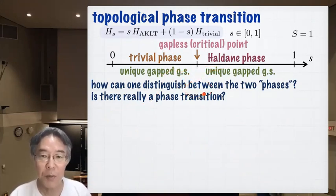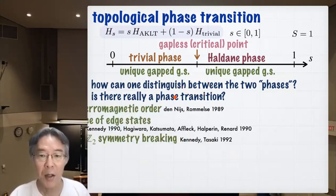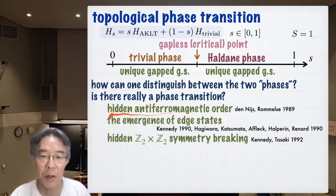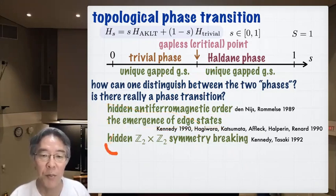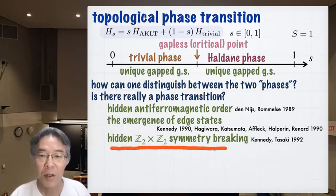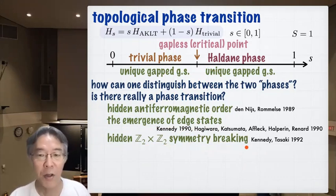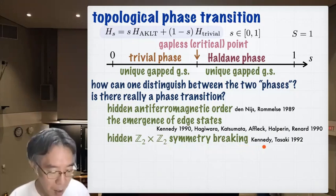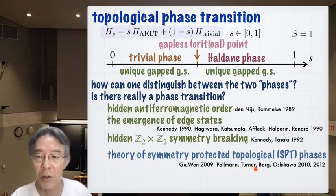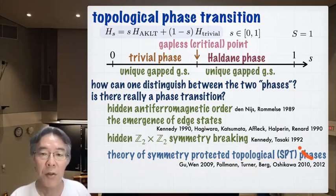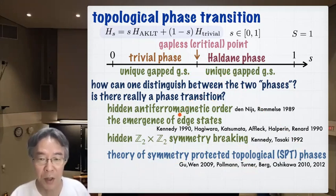This turned out to be a very good problem. Ideas that emerged include hidden antiferromagnetic order and emergence of edge states. Combining these, Tom Kennedy and I proposed the hidden Z2 × Z2 symmetry breaking picture, which looked like the final answer — but we later realized it was not. After some time, Gu, Wen, Pollmann, Turner, Berg, and Oshikawa developed the theory of symmetry protected topological phases, and now we understand this phase transition should be regarded as a transition between two symmetry protected topological phases.